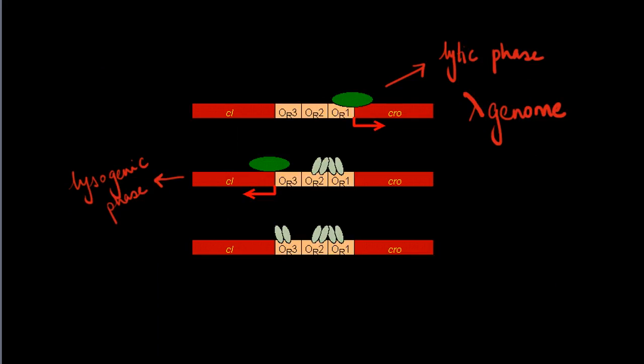In summary, the CI repressor protein is a transcription inhibitor that is very important in determining the life cycle of a lambda phage. As just explained,